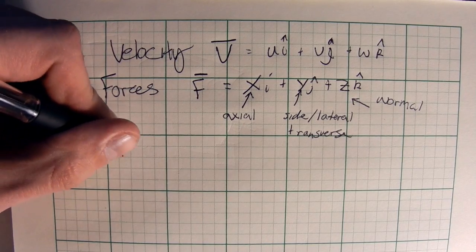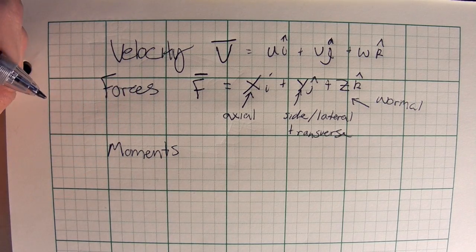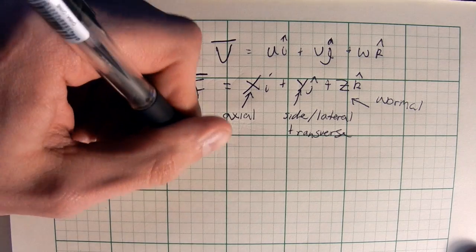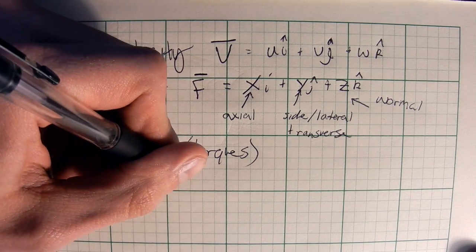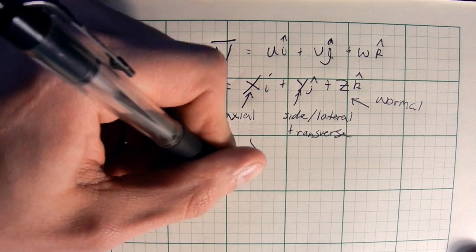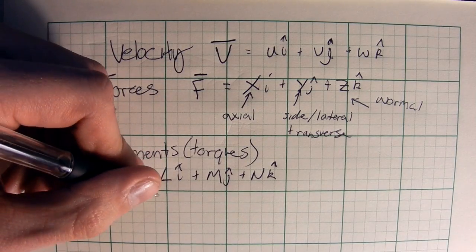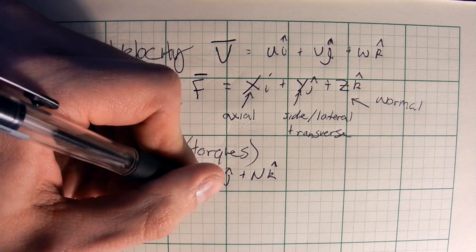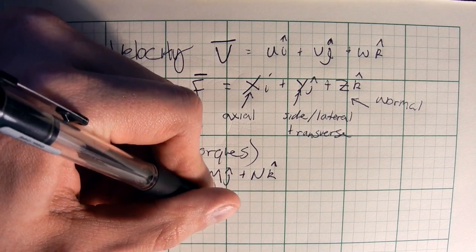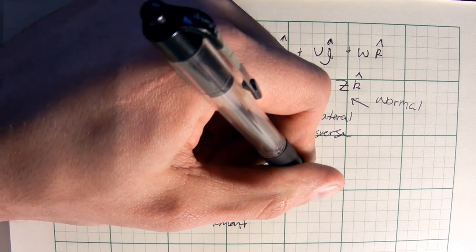Next we have the moments — or torques, another name for it — given as T-bar. T-bar is equal to l in the i-hat direction, plus m in the j-hat direction, plus n in the k-hat direction. Like forces, l is the axial moment, m is the longitudinal moment, and n is the normal moment.